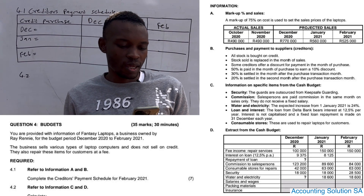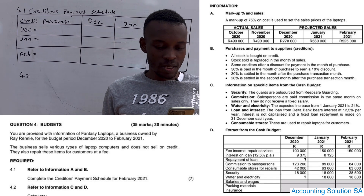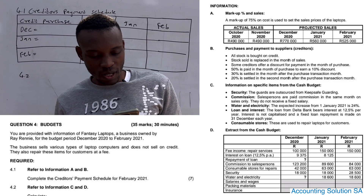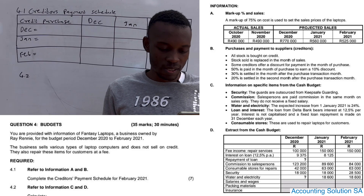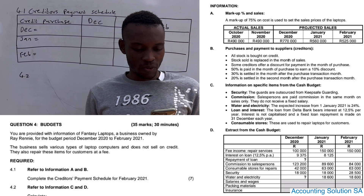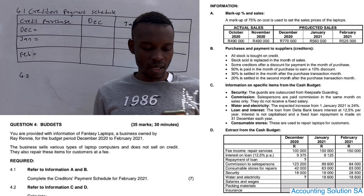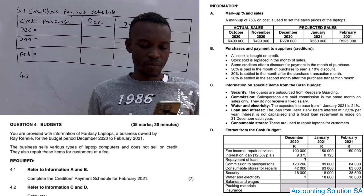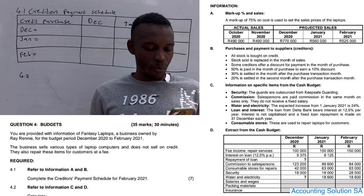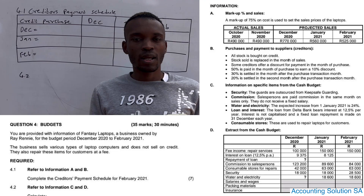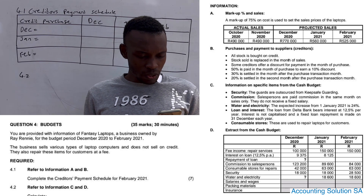You are provided with the information of Fantasy Laptop, a business owned by Ray Rainy, for the budgeted period December to January. The business sells various types of laptop computers and does not sell on credit, and they also repair items for customers at a fee. Required: 4.1 - refer to information A and B - complete the creditors payment schedule. We will also touch 4.2, which relates to calculations recorded under a cash budget. Let's go to information A and B.